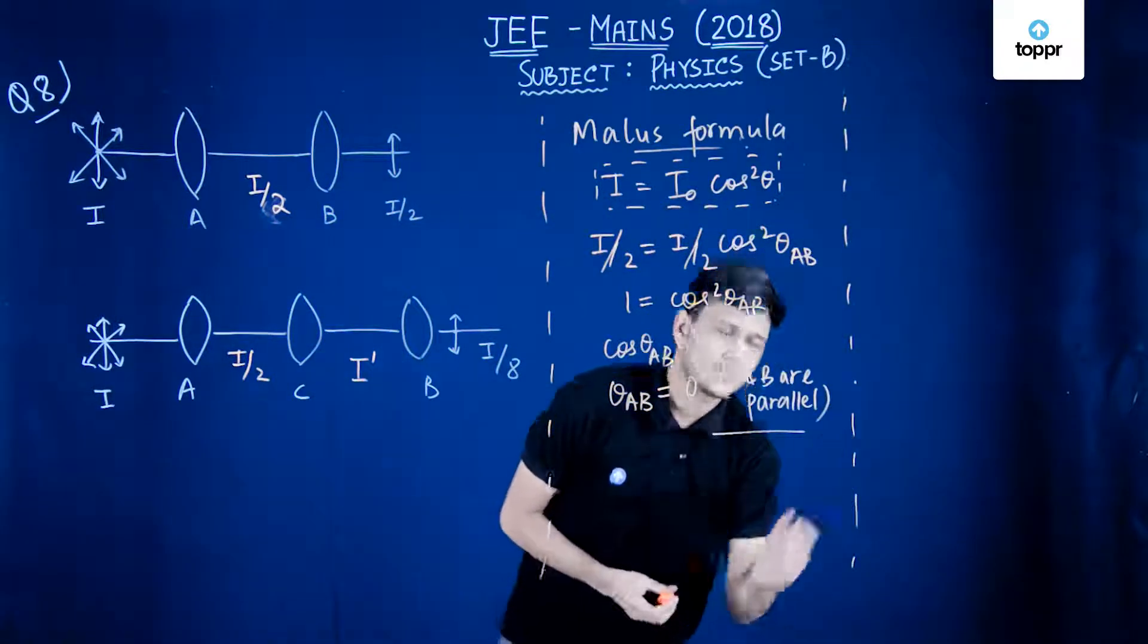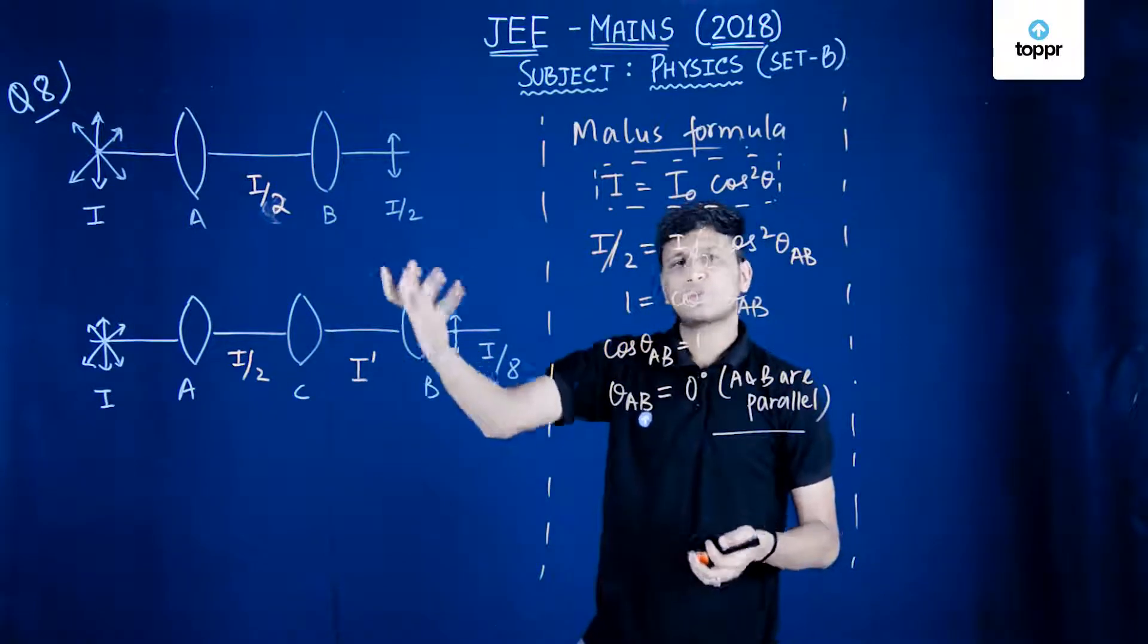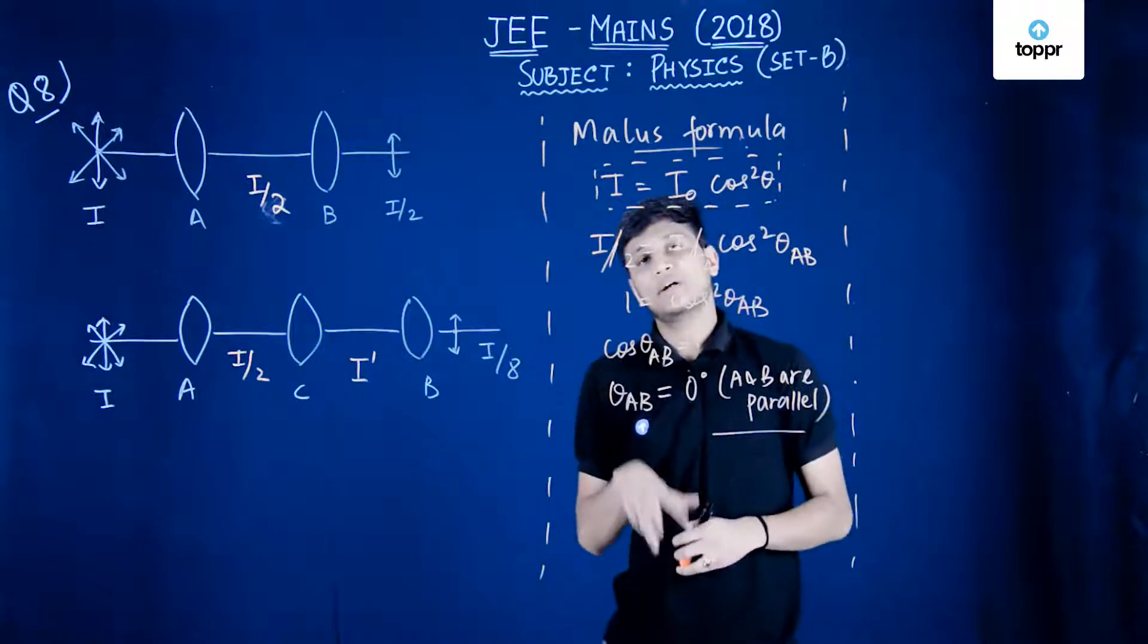So what we have to do is nothing in particular. We just have to apply the Malus formula again and we can simply see. We have to apply Malus formula here two times.